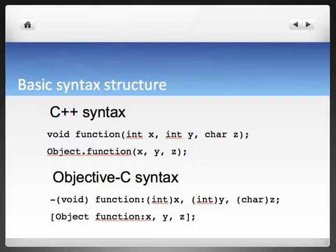Right now we're going to talk about this basic syntax structure, and I want to show you the difference. You see the C++ syntax above, and then you see the void function below. This is going to look very similar to JavaScript too. C++ syntax void function is a function that is not returning anything directly. They have their integers, their variables, x, integer y, character z, object.function(x, y, z). That's the C++ syntax. Now the Objective-C syntax. You have a hyphen, and you have parentheses void function, and you're doing these things very similarly.